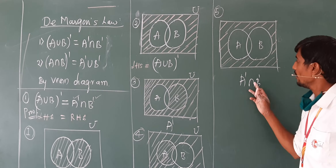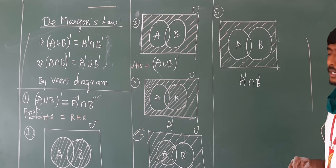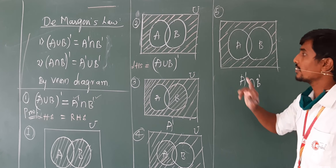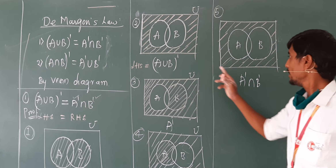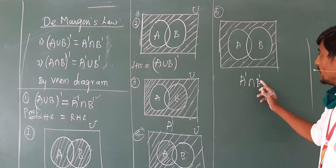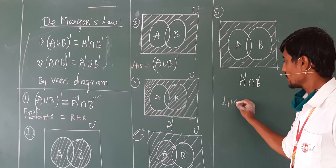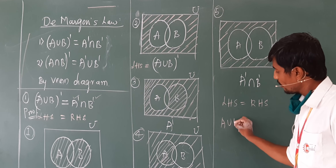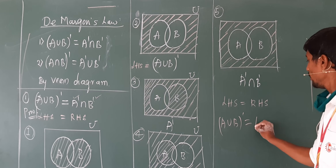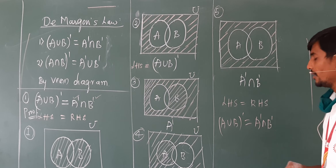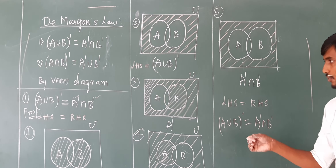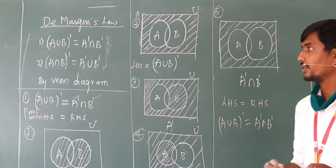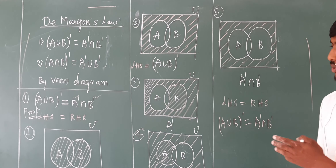Now look at diagram 2 and diagram 5 — both are looking the same. Diagram 2 indicates (A∪B)' and diagram 5 indicates A'∩B'. Therefore, LHS is always equal to RHS. Therefore we can write: (A∪B)' = A'∩B'. This proves the first law of De Morgan's law. Try to prove the second law yourself.